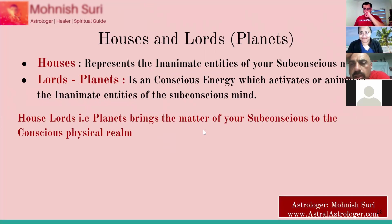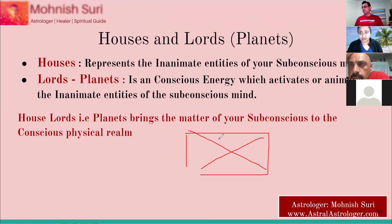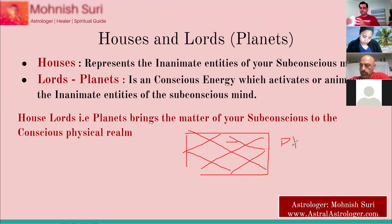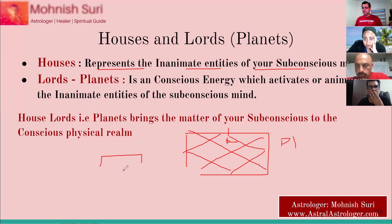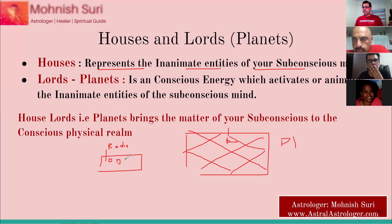Now we know about the houses — we have 12 houses. The chart is all about houses and planets and the lords. Houses represent the inanimate entities of your subconscious mind — they are just the functions and features, like a radio box. The radio box has all the features: the stations to catch, the frequency, what kind of music you want.